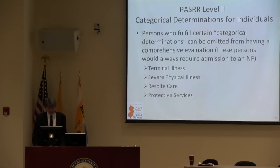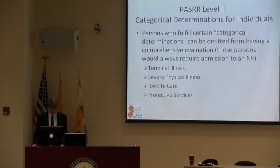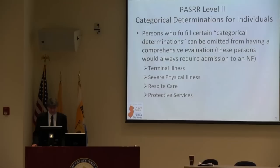If an individual meets one of four categorical determinations, they don't have to have the Level 2 evaluation because they obviously need nursing home care. These are: a terminal illness with less than six months to live; severe physical illness meeting specific criteria; respite care for up to 30 days; and protective services, which can be provided quickly and is only up to seven days.